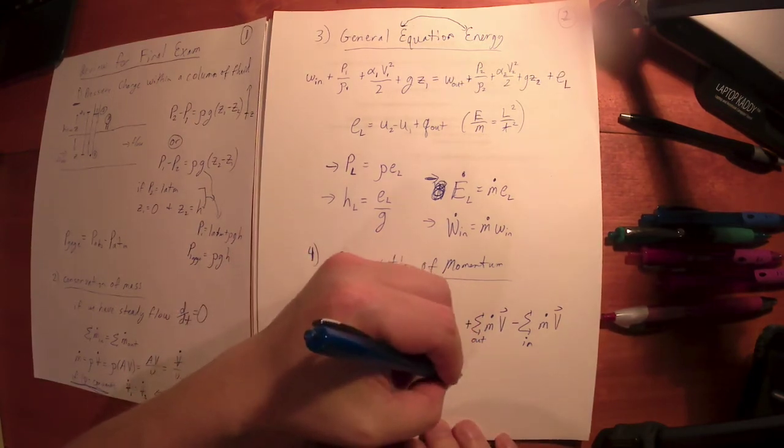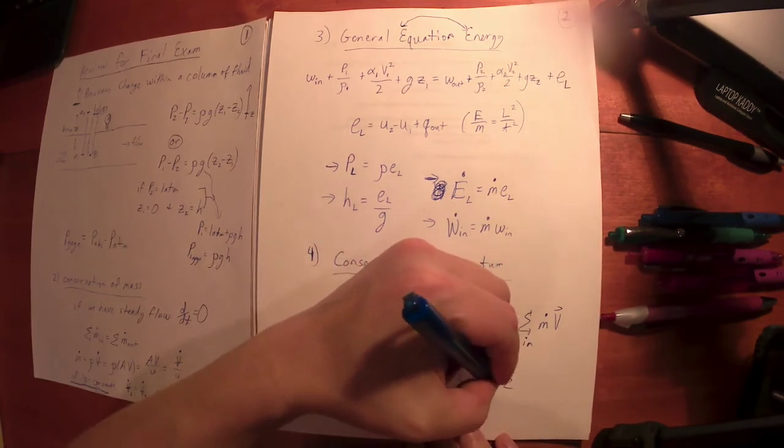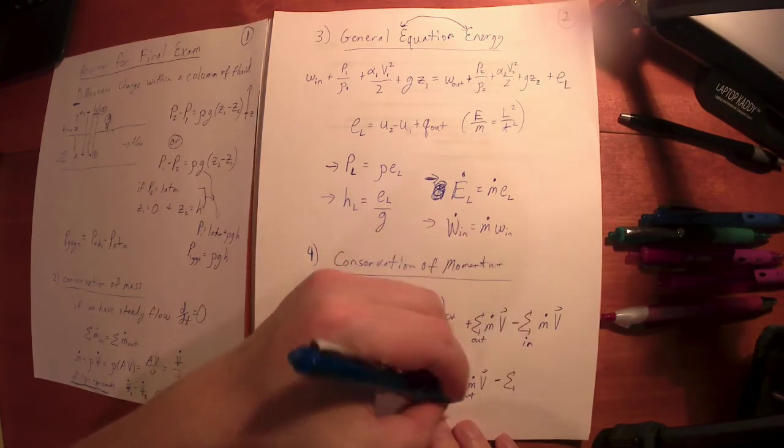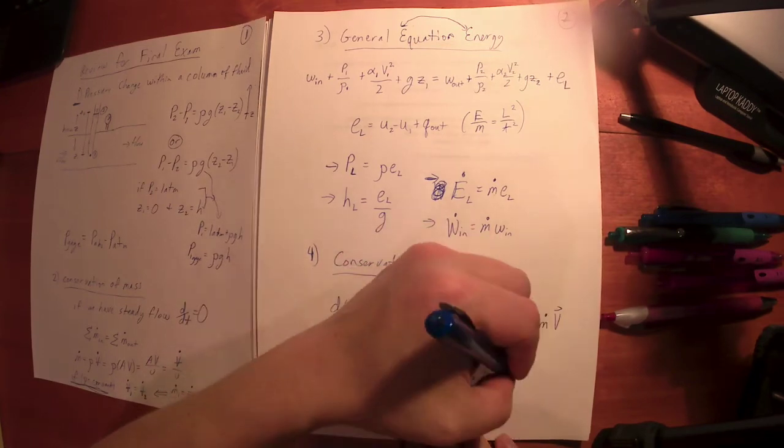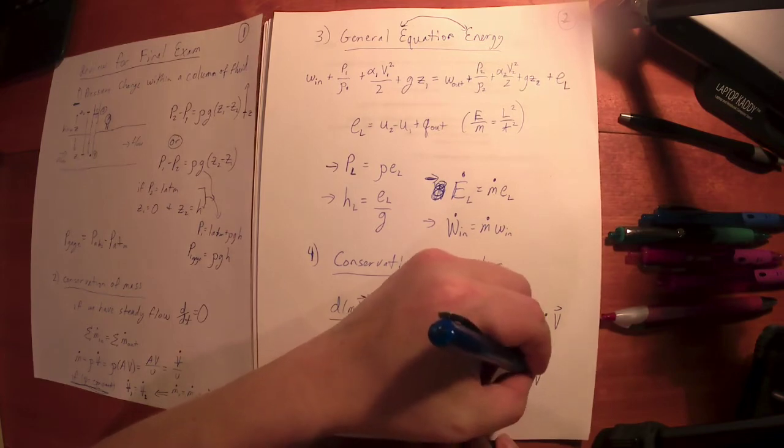So what we do is we say, well, if I keep track of how the momentum of the control volume itself changes, and most of the time we want the control volume to be stationary, so most of the time the change in this velocity is zero, so then it doesn't only matter what the change of mass is.